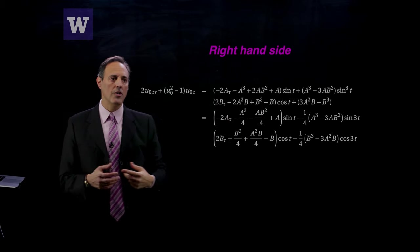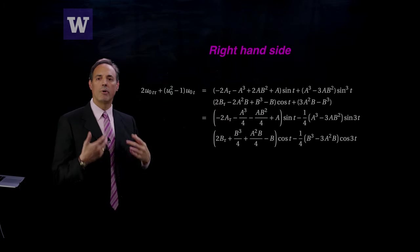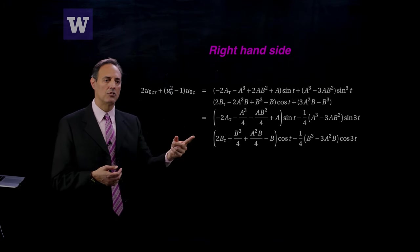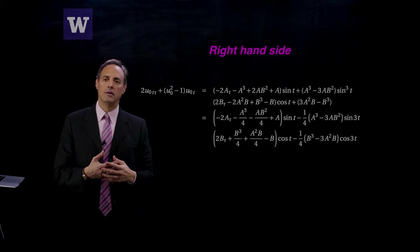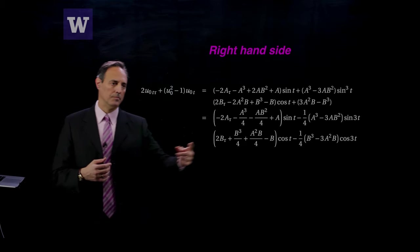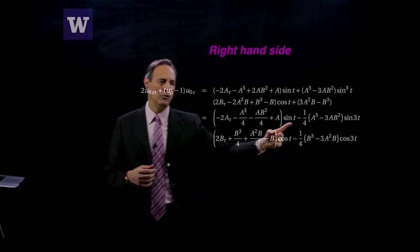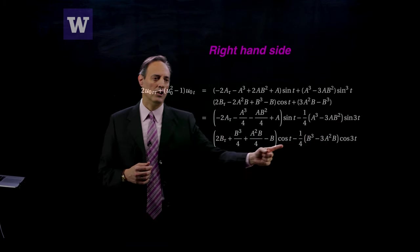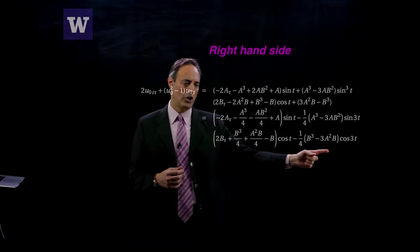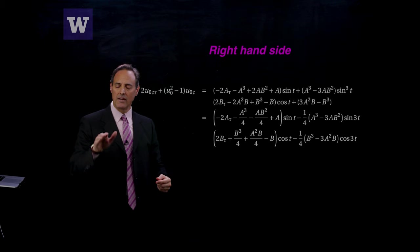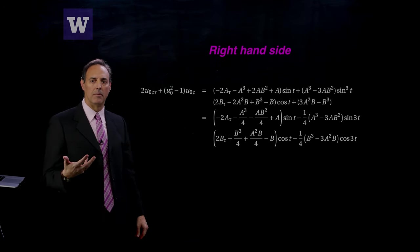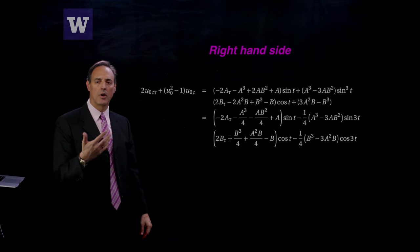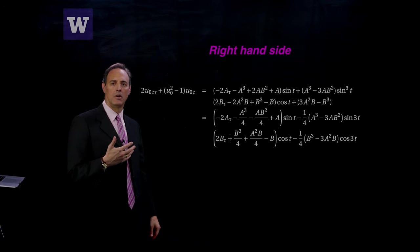I'm going to do a lot of algebra to get to this next form where I pull out all the terms that are sin t. I also have sin 3t terms, cos t terms, cos 3t terms. The sin 3t and cos 3t terms aren't in the null space, so I don't have to worry about solvability conditions with them.